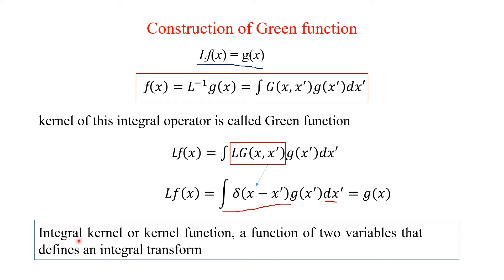The integral kernel or kernel function is defined as a function of two variables, here x and x prime, that defines the integral transform. The integral transform is defined by this Green's function, which is a two-variable function of x and x prime.